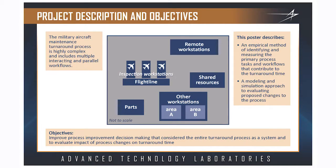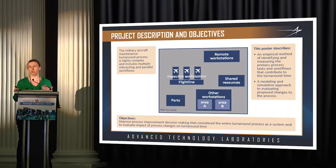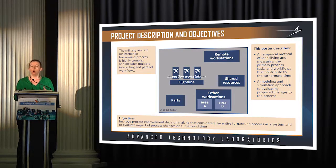You can see here the typical structure of the turnaround process — the process of turning around a plane that has just landed. Planes come in on the flight line, there are remote workstations, various technicians come in and perform diagnostics, and then figure out what to do with the airplane. It is either confirmed to be in great shape and can be turned around just fueled for the next mission, or it needs to have repairs.